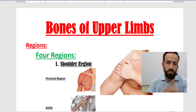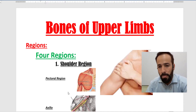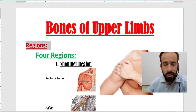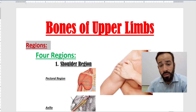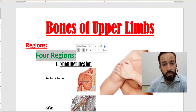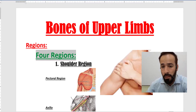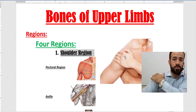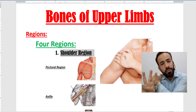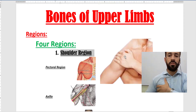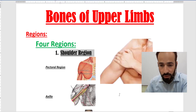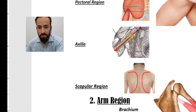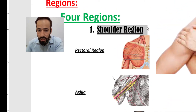We are starting with the bones of the upper limb. First, we should know that our upper limb has certain regions. There are four main regions: the first is the shoulder region. The shoulder region itself is divided into three sub-regions: the pectoral region, the axilla, and the scapular region.